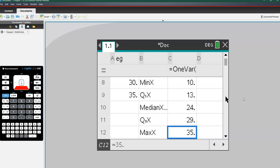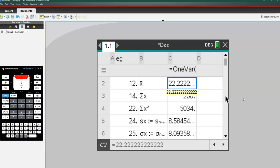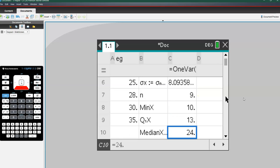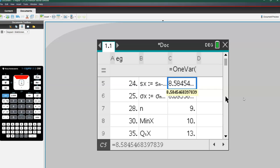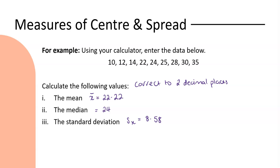So in terms of the question that we're, or the example we're answering, we need the mean. So back at the top, our mean, 22.2 recurring. We've got the median. So coming back down, the median is 24. And finally, the standard deviation. Remember, we will always use SX. And so that will be 8.58 correct to two decimal places. And so there you can see our three responses correct to two decimal places.